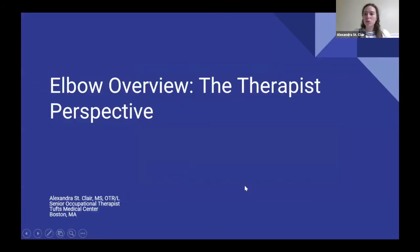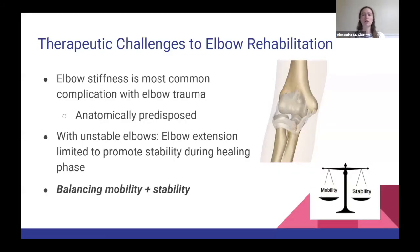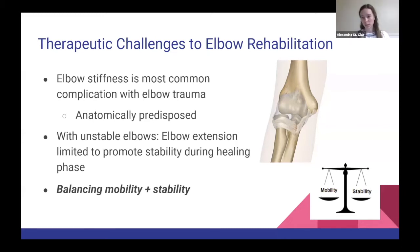Alex St. Clair: I want to go over the elbow from the therapist perspective. Even for experienced therapists, the elbow can be quite challenging and frustrating to rehab, mainly because it's so prone to stiffness. It has high contact articular congruency and is anatomically predisposed to become stiff — even with a small trauma you can get loss of motion. With more complex injuries where there's concern for instability, the elbow is often immobilized in some degree of flexion, with rotation restricted, which contributes to stiffness later in rehab.